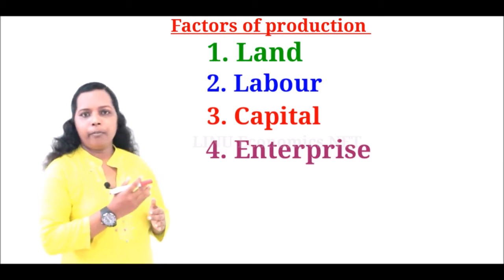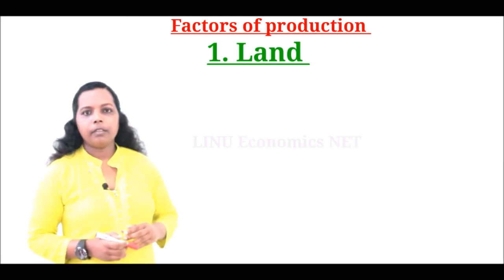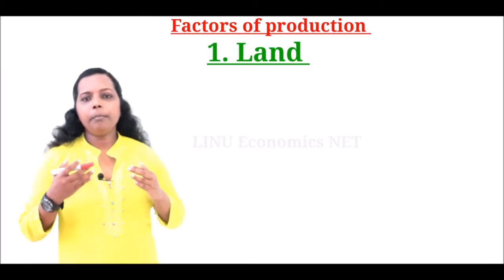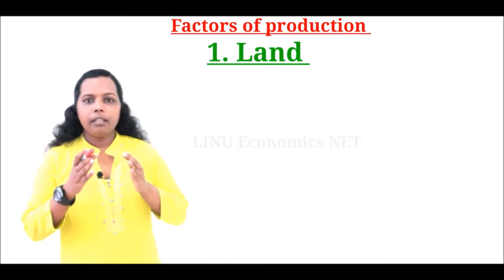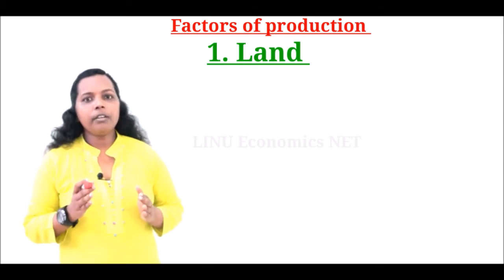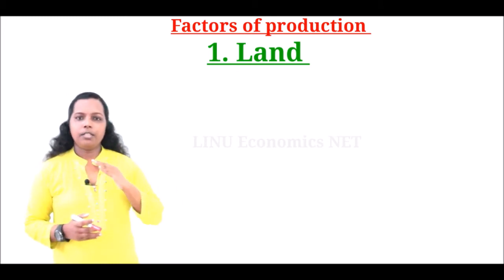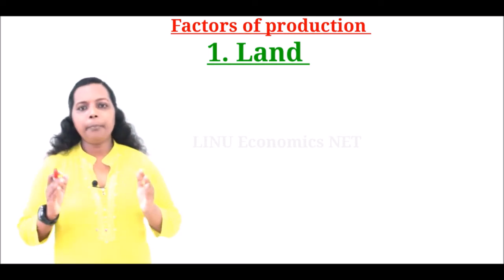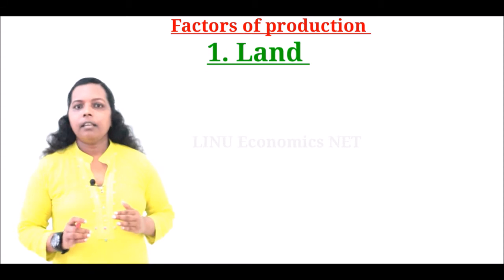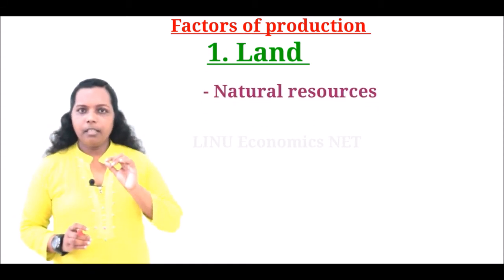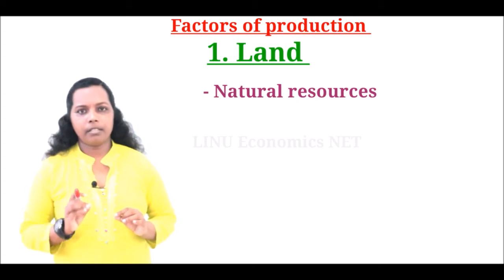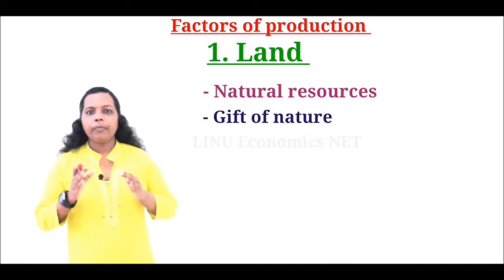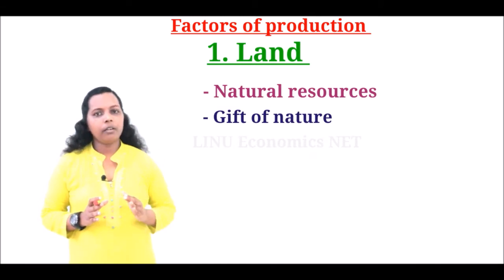Let's discuss one by one. Number one, land. When we hear the word land, what comes to our mind? The common meaning may be the part of the earth's surface that is not covered by water, or a state or a country. But in economics, the word land has a wider meaning. That means any natural resource that is used to produce goods and services is called land. It is the gift of nature. So all the natural resources together are called land.